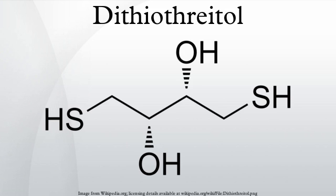Generally, DTT is used as a protecting agent that prevents oxidation of thiol groups. DTT is frequently used to reduce the disulfide bonds of proteins and, more generally, to prevent intramolecular and intermolecular disulfide bonds from forming between cysteine residues of proteins.